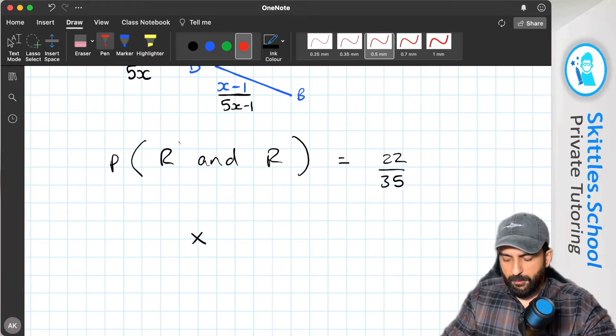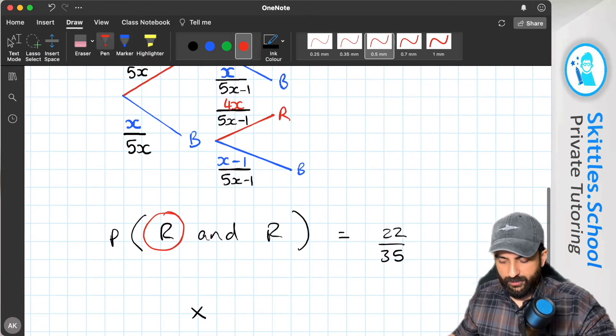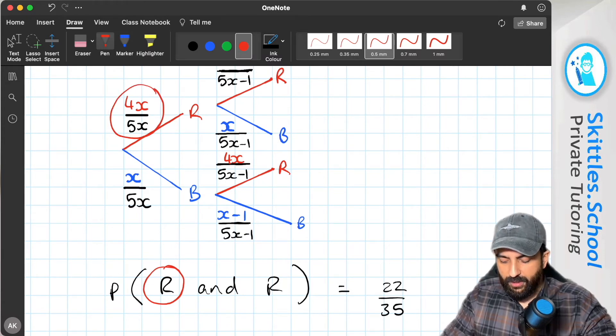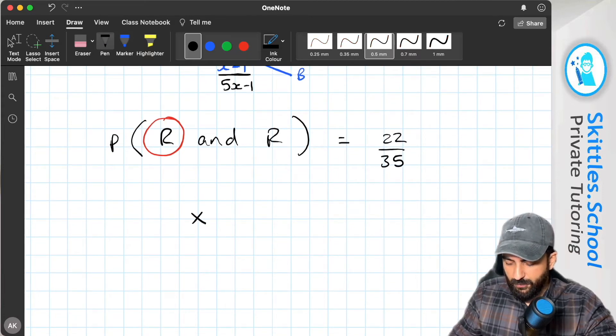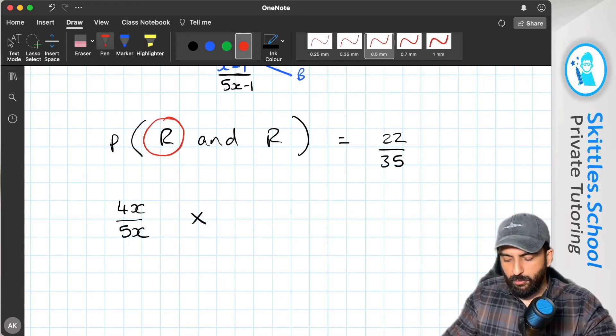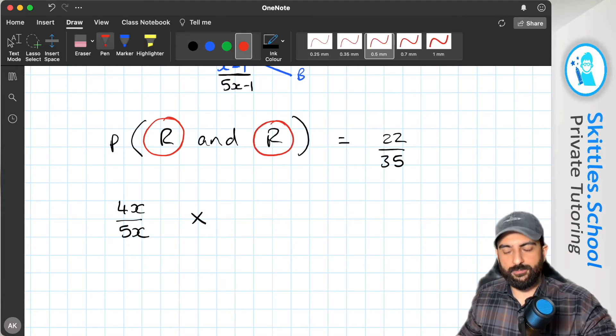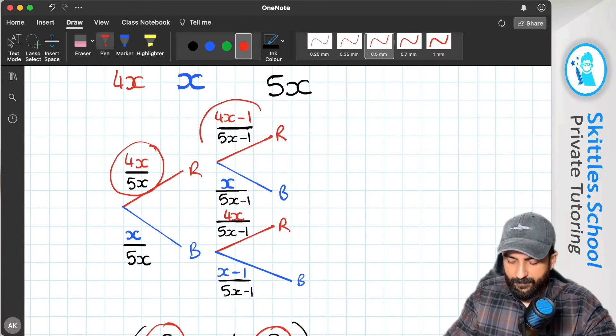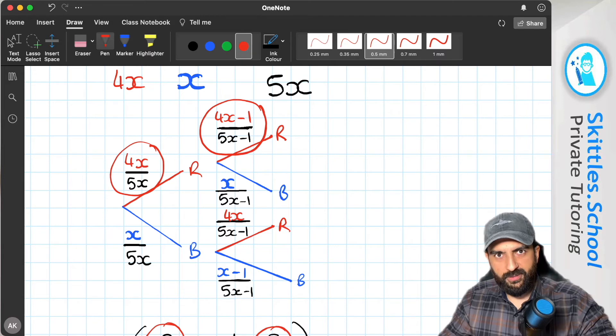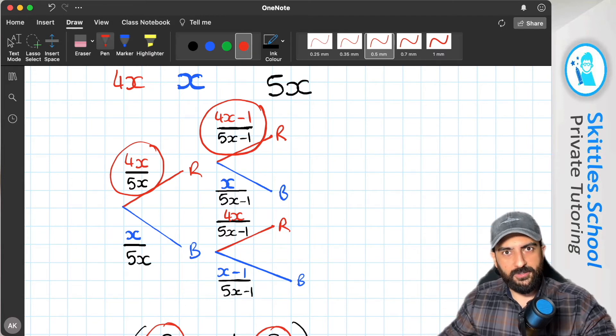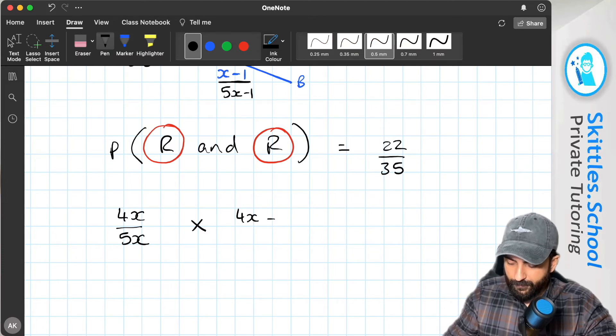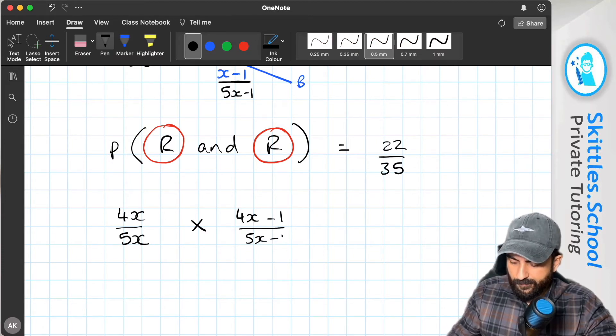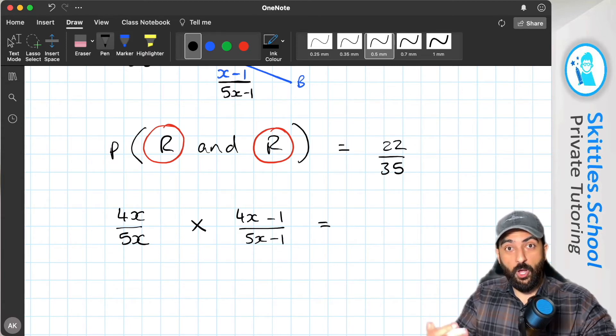Okay, so what's the probability of the first red counter? Well, that's this one here. That's 4x over 5x. That's our first red counter. Okay, what about the probability of the second red counter? That's this one here. That's 4x minus 1 over 5x minus 1. And they still equal the 22 over 35.